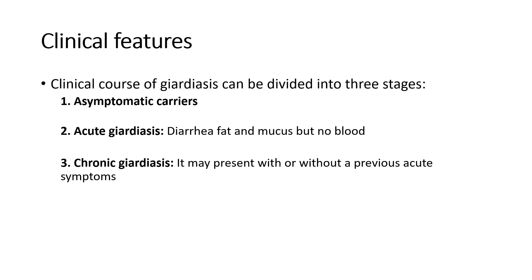Clinical features — we can divide into three stages. First, asymptomatic carriers: they carry the infective form, meaning cysts, and spread the infection to others. Second, acute giardiasis: we can see diarrhea with fat and mucus in the stool, but no blood. Third, chronic giardiasis: it may present with or without acute symptoms.